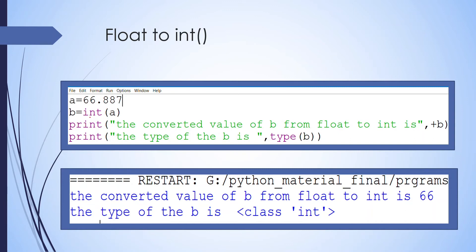Now float to int: if we have a value 66.887, that is a float type value stored in variable a, then b = int(a). Print the converted value of b from float to int. The type of b is class int. When we change a float to int, the decimal part is removed — for example 66.887 becomes 66.